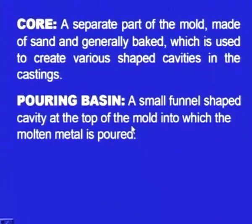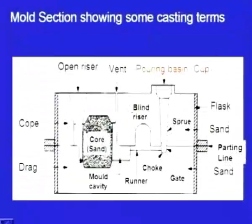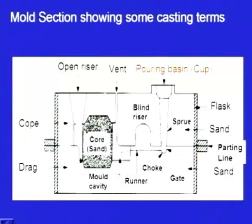The pouring basin is a small funnel-shaped cavity at the top of the mould through which we pour the molten metal. The molten metal falls through this basin, passes through the choke, enters into the cavity, and rises up.